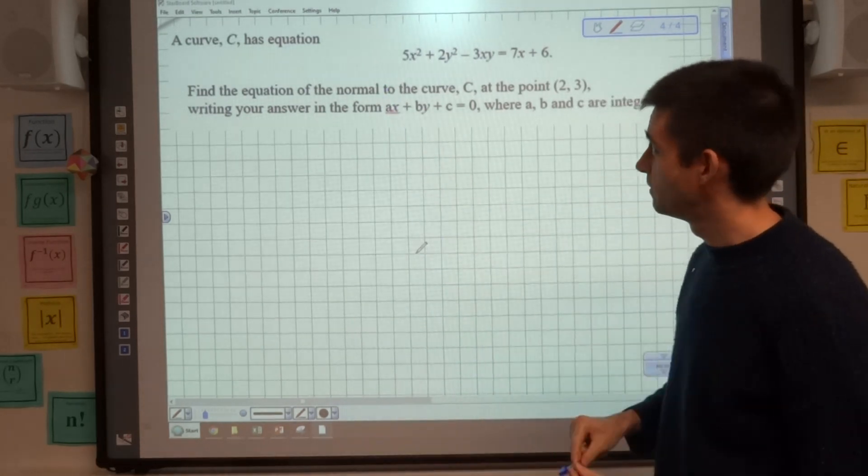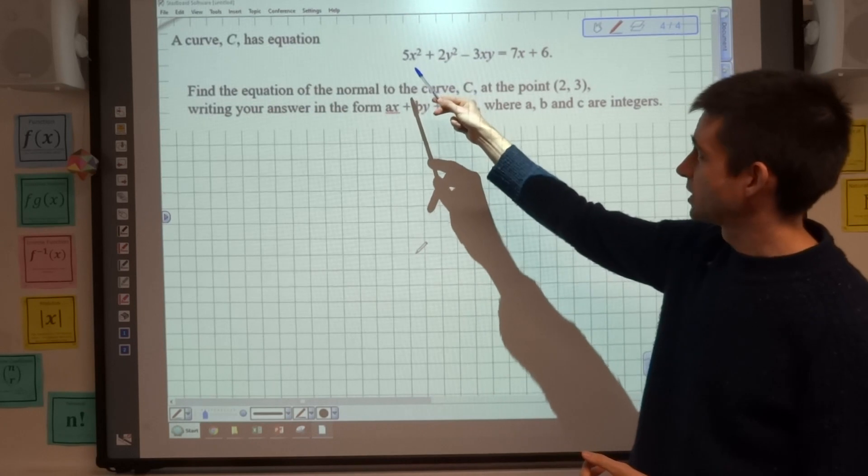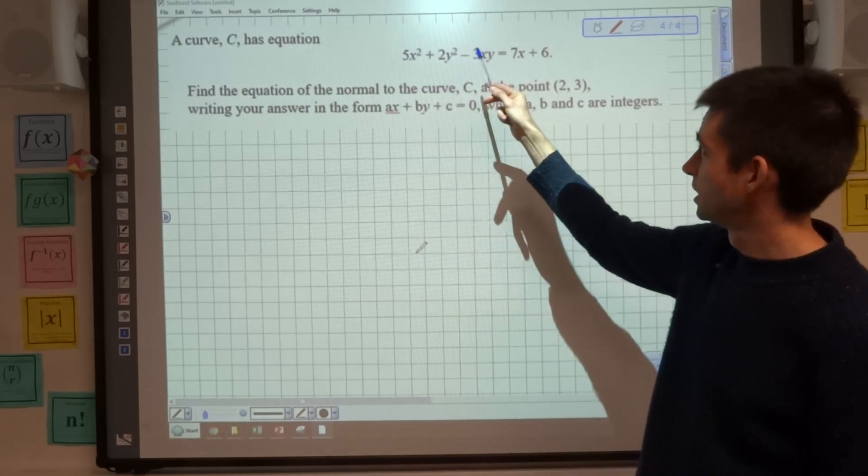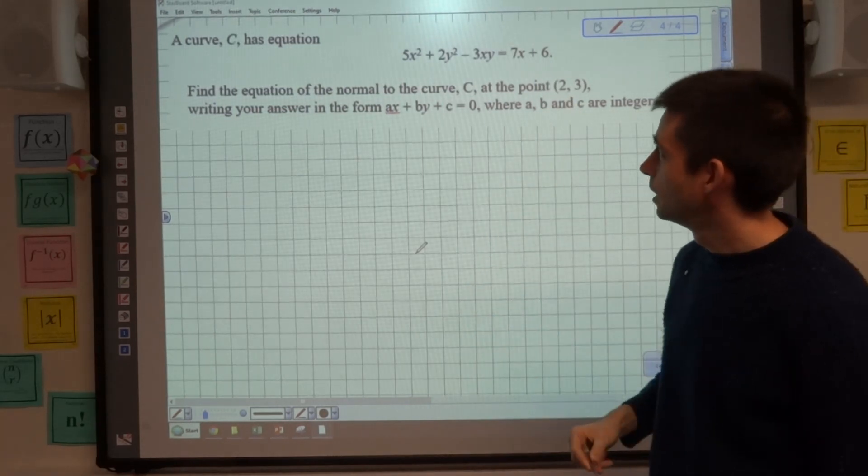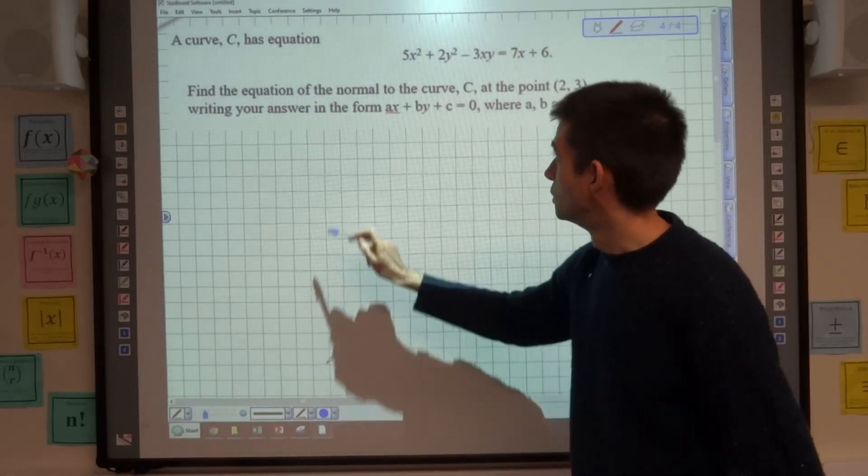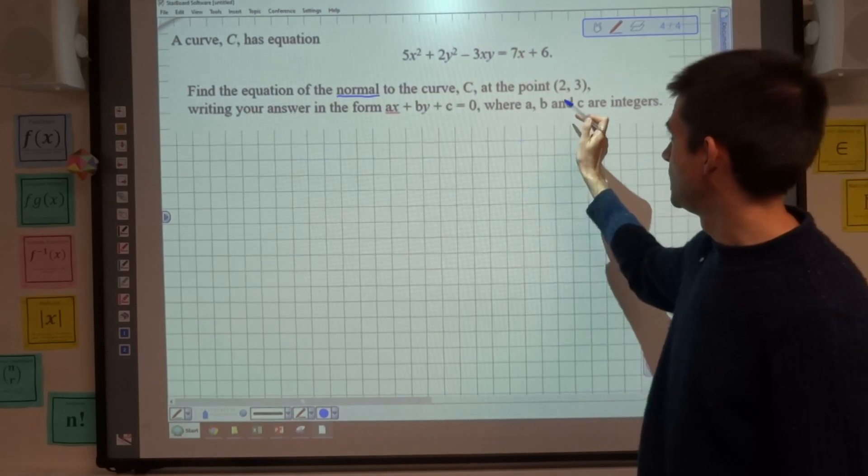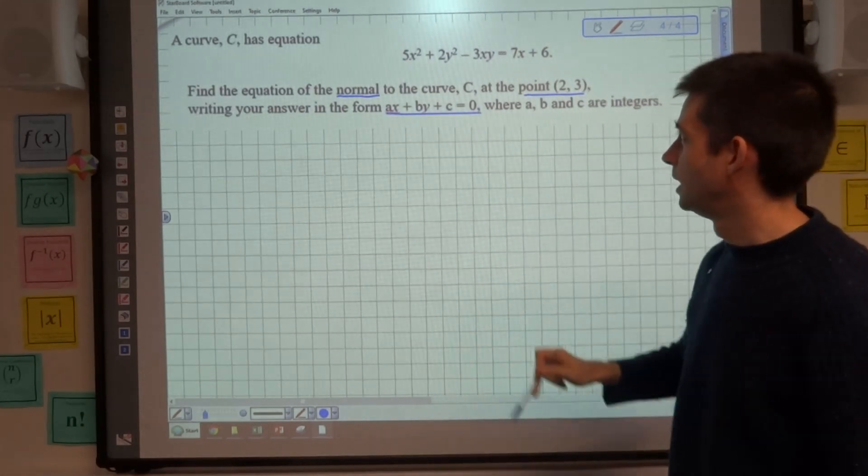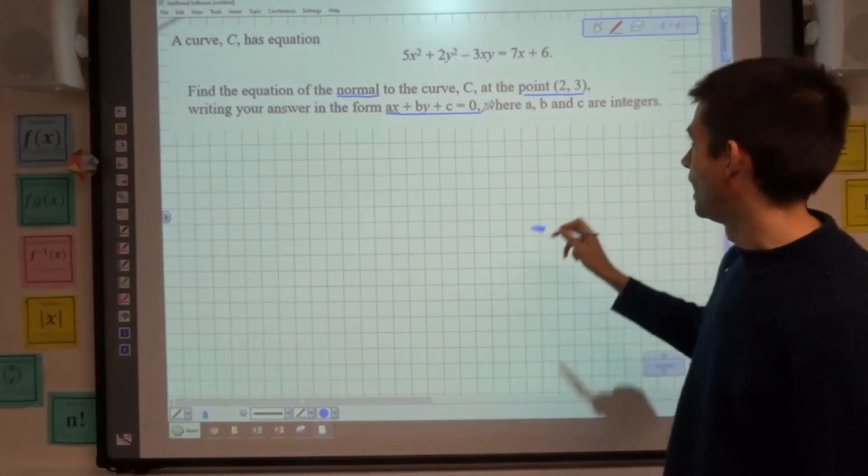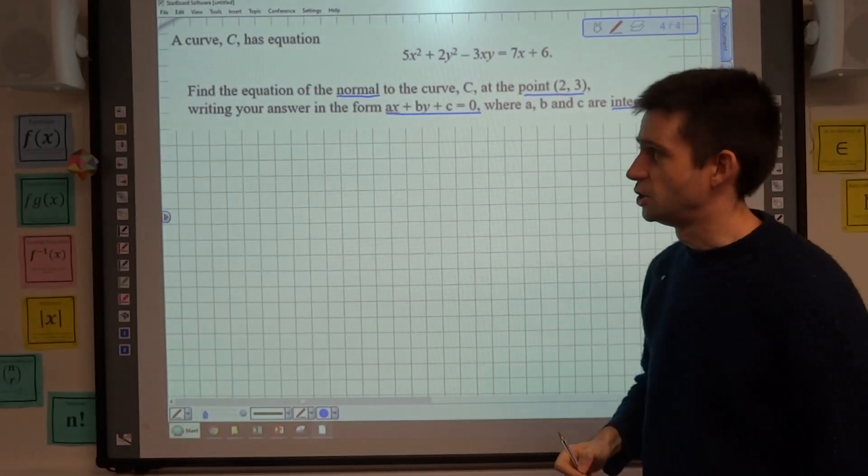So here we have a curve C with equation 5x² + 2y² - 3xy = 7x + 6. Find the equation of the normal to the curve C at the point (2, 3), writing your answer in form ax + by + c = 0, where a, b and c are integers.